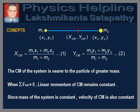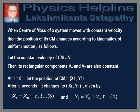When the net external force acting on a system is zero, the linear momentum of its center of mass remains constant. Since the mass of the system is constant, the velocity of the center of mass is also constant. When the center of mass moves with constant velocity, its position changes according to the kinematics of uniform motion. Let the constant velocity of the center of mass be v, with rectangular components vx and vy also constant. At t equal to 0, let the position of the center of mass be x0, y0. After t seconds, it changes to xt, yt, given by equations 3 and 4.